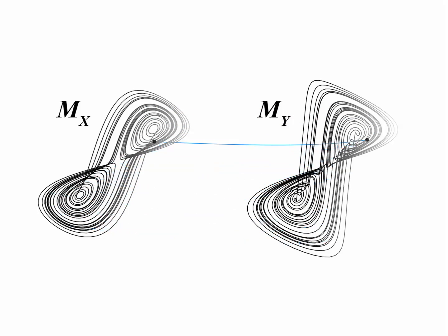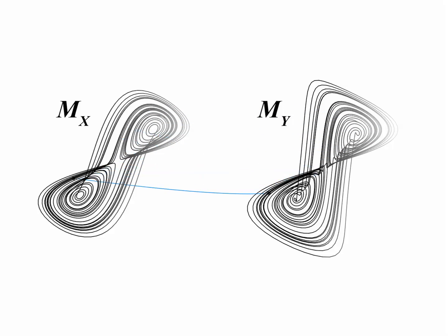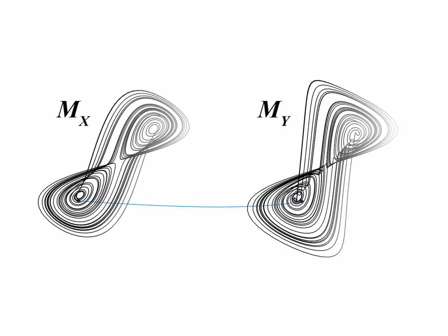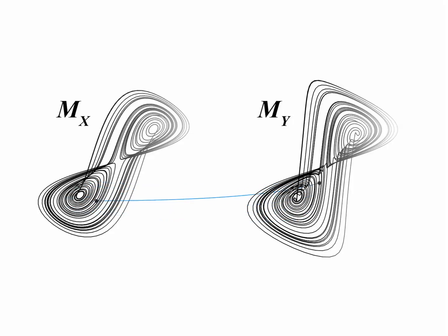With longer time series, the reconstructed manifolds are denser, nearest neighbors are closer, and the cross-map estimates increase in precision. We call this phenomenon convergent cross-mapping and use this convergence as a practical criterion for detecting causation.